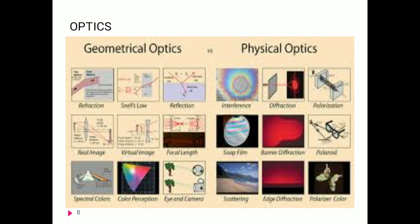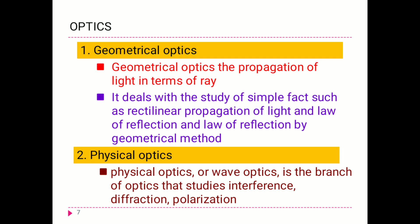Newton proposed the corpuscular color theory, based on simple facts such as rectilinear propagation of light, law of reflection, and law of refraction by the geometrical method. Now, physical optics or wave optics is a branch of optics that studies interference, diffraction, and polarization.